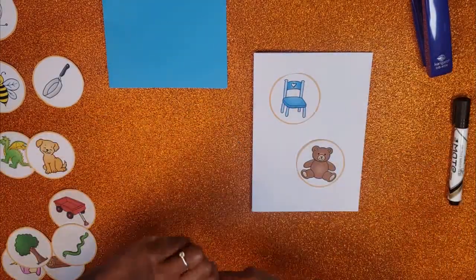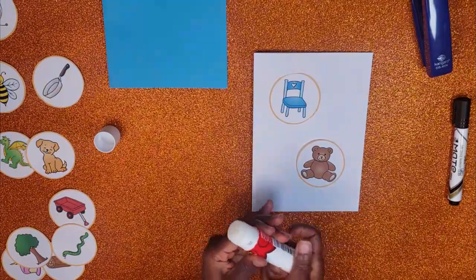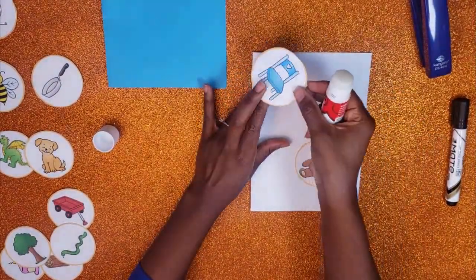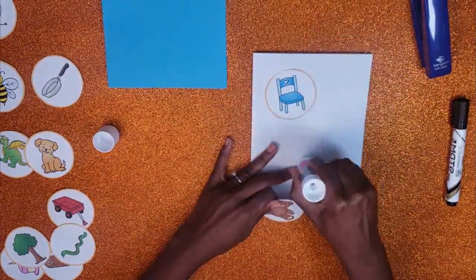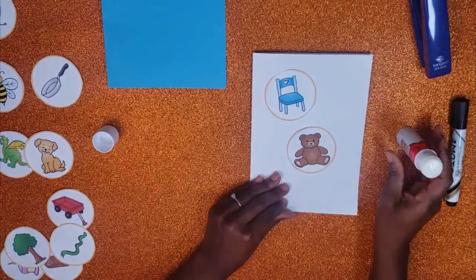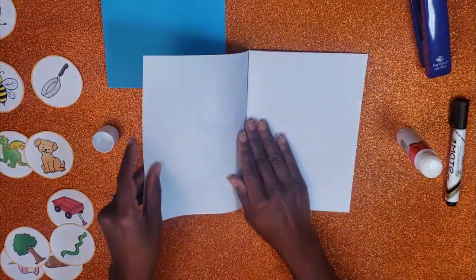They can then glue them onto the page. Be sure to support as needed by clearly saying the name of each picture. Your child can simply stick their pictures anywhere they would like on the page. There is no right or wrong way to go about doing this.